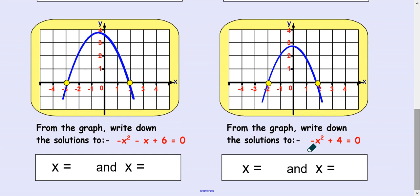Okay, two more examples. So this time, the graph is upside down, if you like, or a maximum turning point. It's going up to a maximum and coming back down the other side. That's because there's a negative x squared here.